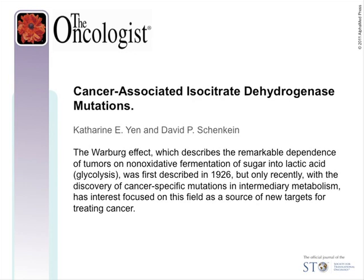Initially, these mutations were thought to totally abolish the catalytic activity of the enzyme. However, further work revealed that the mutations actually confer a novel gain of enzymatic function, leading to the reduction of alpha-KG to the metabolite 2-hydroxyglutarate, 2-HG. This observation was supported when extraordinarily high levels of 2-HG — 50 to 100-fold higher than in normal tissues — were also found in malignant glioma samples from patients harboring either IDH1 or IDH2 mutations.